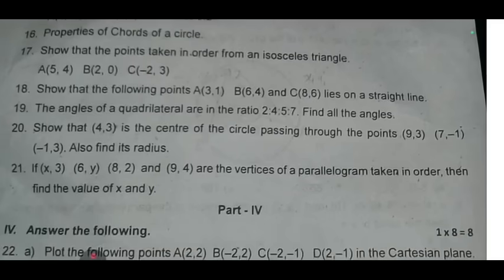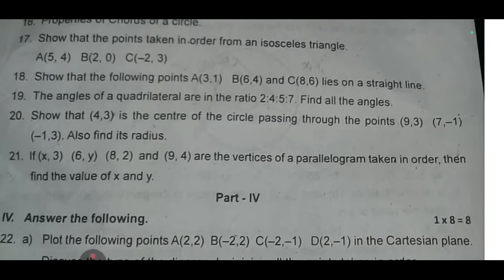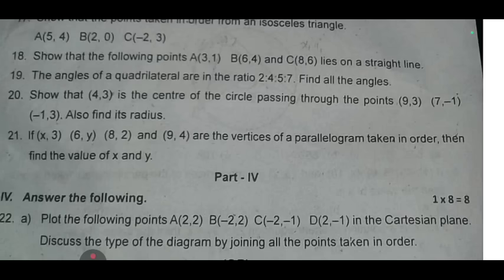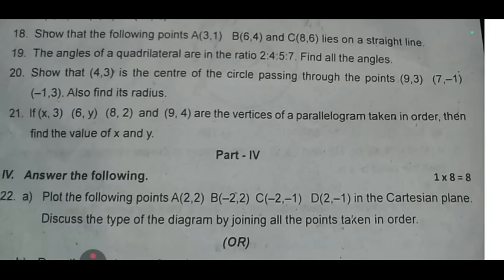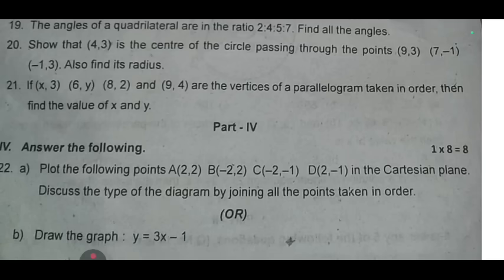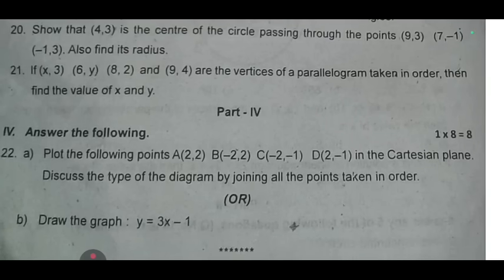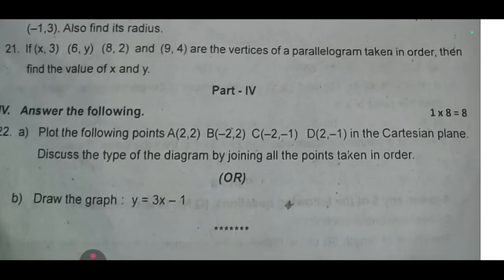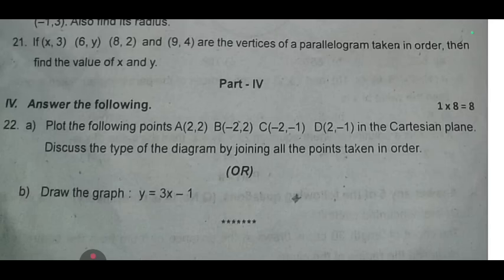This is part 4, 8 marks. Plot the following points A (2, 2), B (-2, 2), C (-2, 1), D (2, 1), discuss the type of diagram by joining all the points. Or draw the graph: y equal to 3x minus 1.